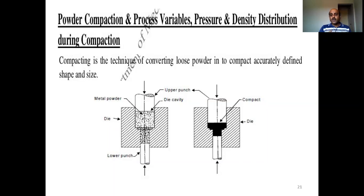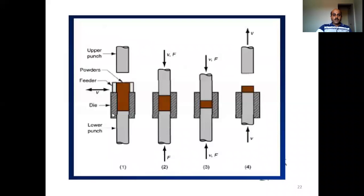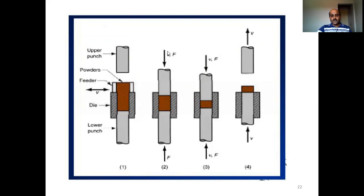This conversion takes place by the application of pressure externally from both the top and bottom sides. You can see in another sketch: the powder, upper punch, lower punch, and die cavity. We apply pressure from both the top and bottom, and we keep increasing the pressure so it gets compacted. This is the loose powder going through intermediate stages and finally, the loose powder has been converted into a desired shape and size.